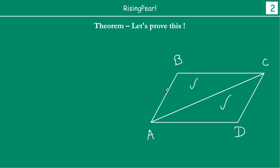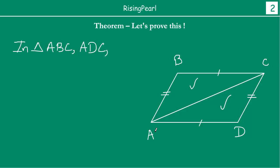We are trying to divide it into two triangles and see if these triangles are congruent using the congruence rules we learned in series 7, where we explored triangles. Then we find out which angles are equal and which sides are equal, and accordingly we can say they are parallel or equal. So we join AC, and then we have two triangles: triangle ABC and triangle ADC.